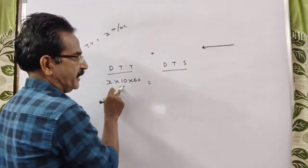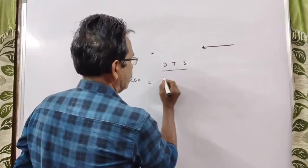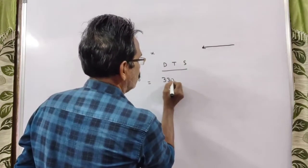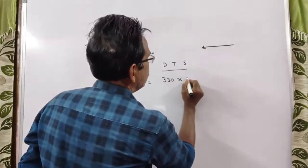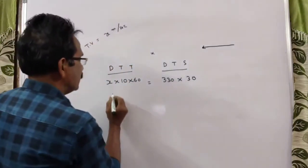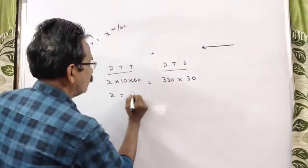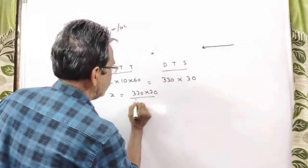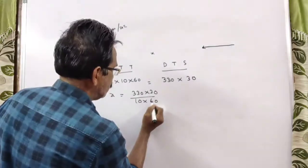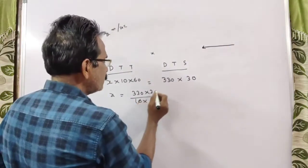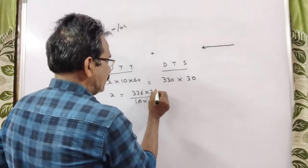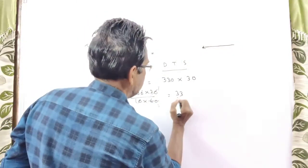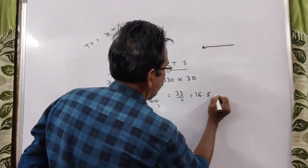Distance travelled by the sound in 30 seconds: velocity of sound is 330 meters per second into time 30 seconds. So x is equal to 330 into 30 divided by 10 into 60. The zeros get cancelled, giving 33 by 2, which is equal to 16.5.